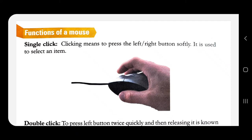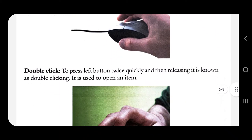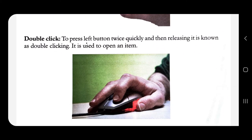Double click: pressing the left button twice quickly and then releasing it is known as double click. If you press the left button of the mouse two times, the item will be opened. It is used to open an item.